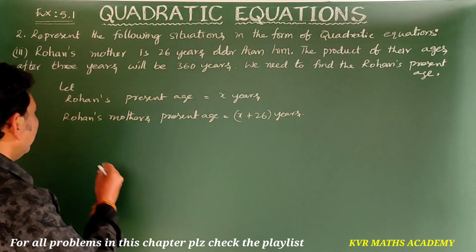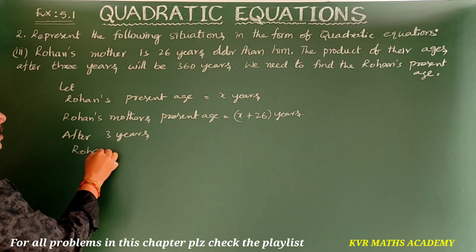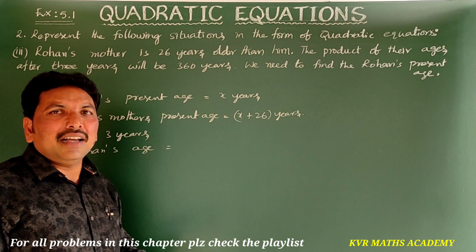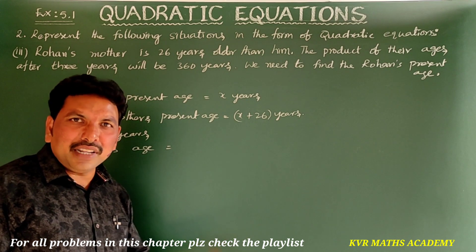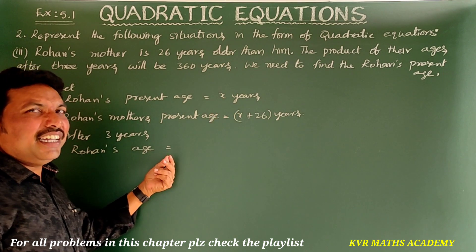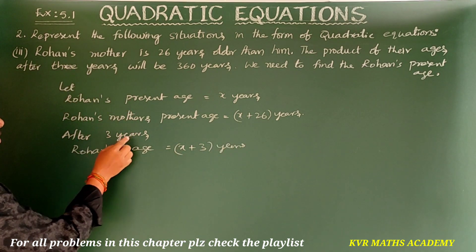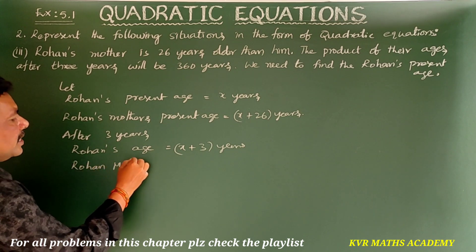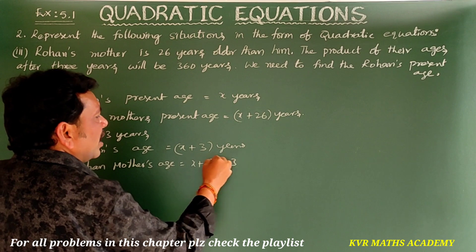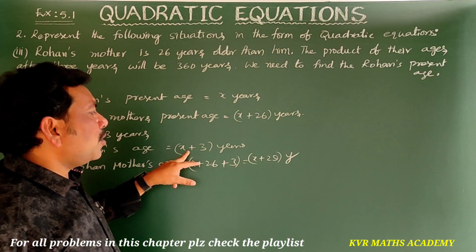After 3 years, Rohan's age will be x + 3 years. For example, if Rohan is 20 now, after 3 years he will be 23, because 20 + 3 = 23. Similarly, after 3 years, Rohan's mother's age will be (x + 26) + 3 = x + 29 years.